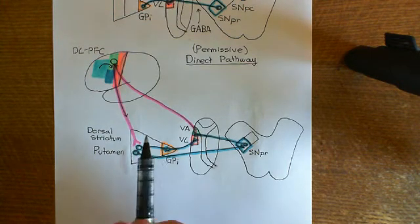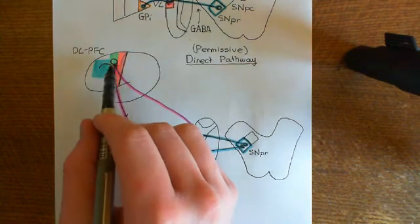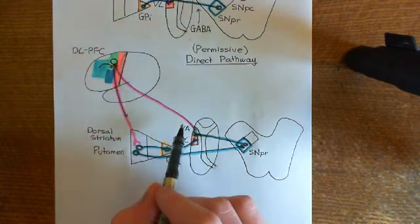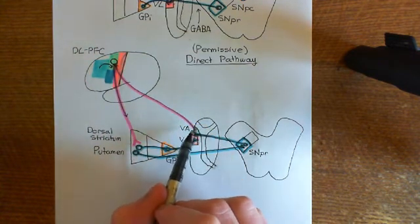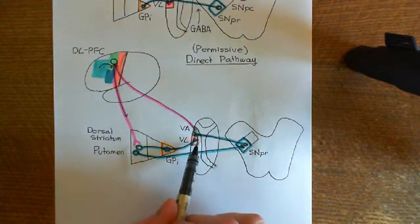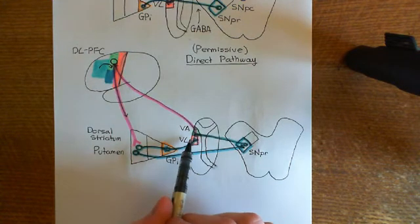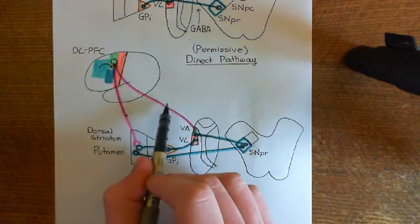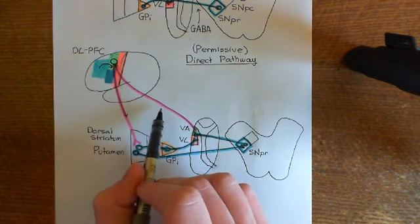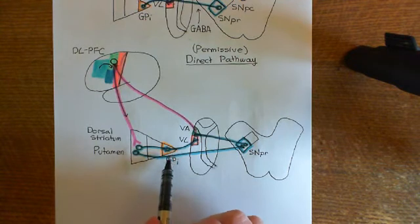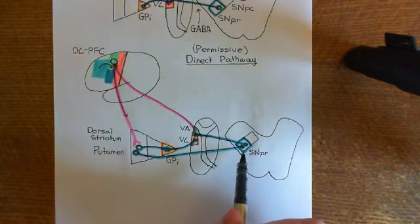We've seen that in order for the secondary motor cortex to actually be able to send its motor plan to the primary motor cortex, it needs to receive a permissive signal which comes from neurons in the ventral anterior and ventral lateral thalamic nuclei. Usually the permission signal is not coming to portions of the secondary motor cortex, because these neurons are not usually active - they are innervated by inhibitory GABAergic neurons which are in both the internal globus pallidus and also the substantia nigra pars reticulata.